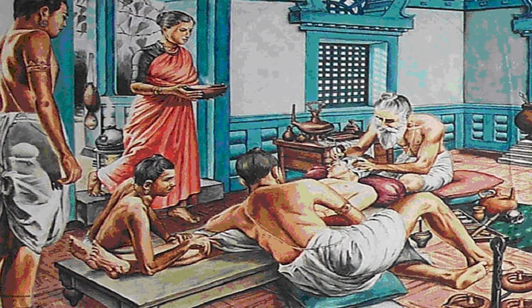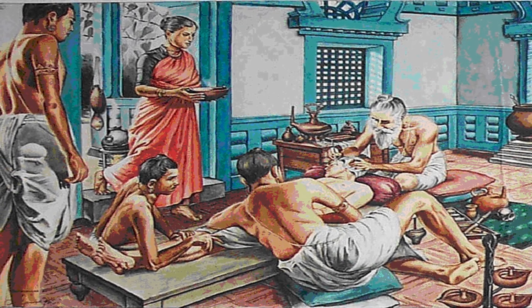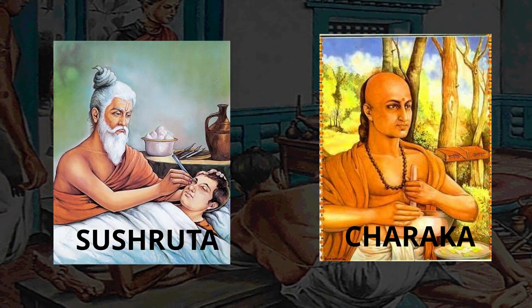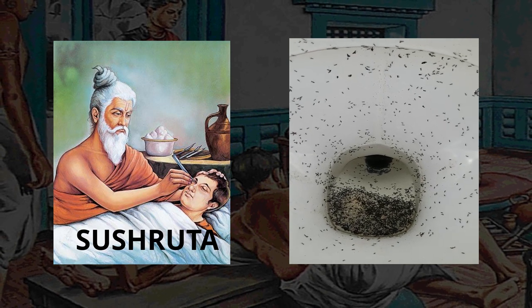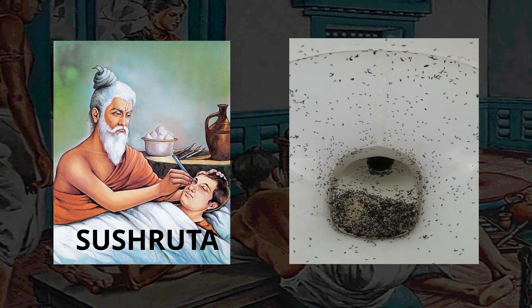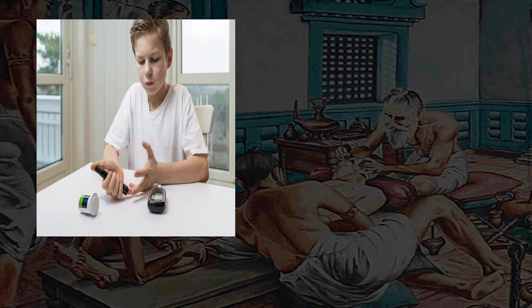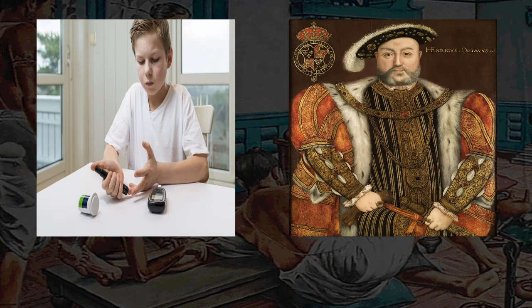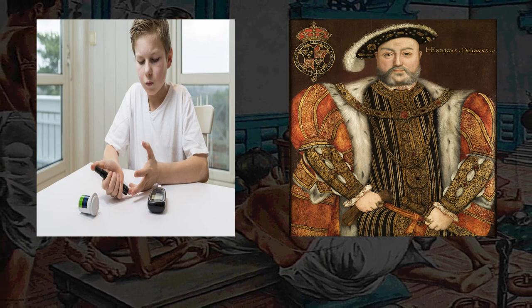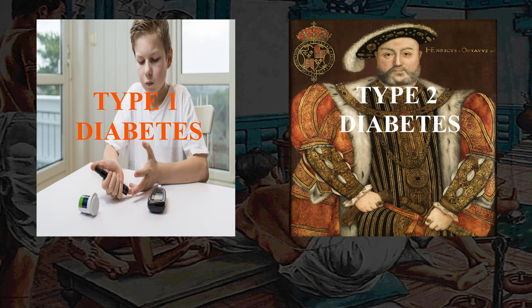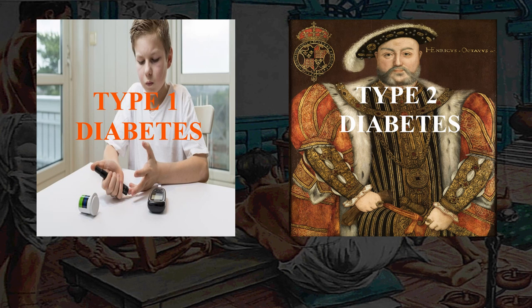The ancient group of people who knew the most about diabetes were the Indians during the 5th century BC, mainly led by doctors such as Sushruta and Charaka. Sushruta was able to diagnose the condition by observing that ants were attracted to the sweetness of a patient's urine. Indian medical texts were also able to differentiate between diabetes that forms in young children with no known cause and diabetes that forms in older people who consumed an excessive amount of things like cereals, rice, and sweets — knowledge that wouldn't become mainstream in western science until the 19th century.